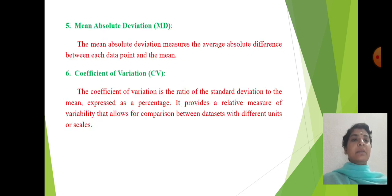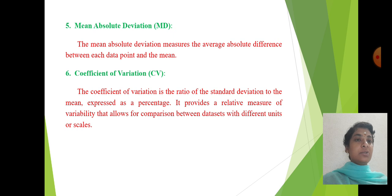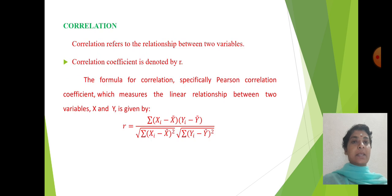Mean deviation: the mean absolute deviation measures the average absolute difference between each data point and the mean. The sixth one is coefficient of variation. The coefficient of variation is the ratio of standard deviation to the mean, expressed as a percentage. It provides a relative measure of variability that allows for comparison between data sets with different units or scales.